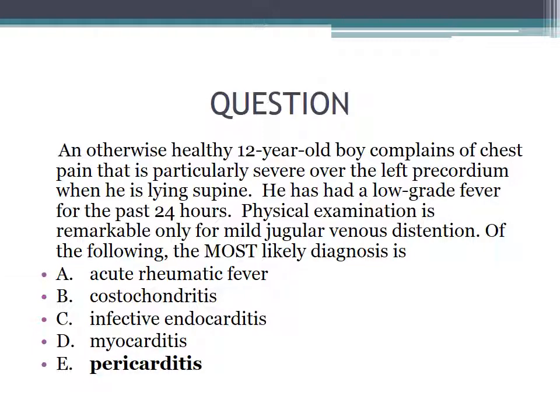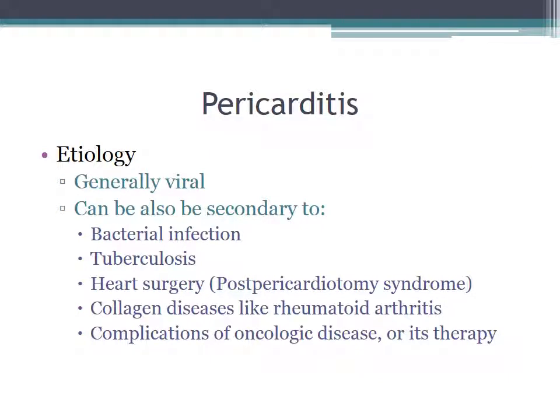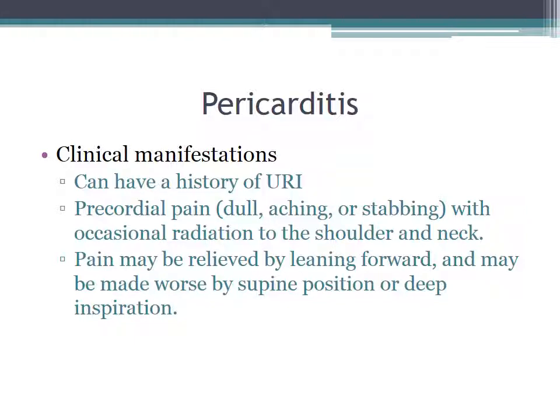The correct answer is pericarditis. Turning towards the etiology of pericarditis, it's typically viral, except when it's not — then it can be secondary to bacterial infection, tuberculosis, heart surgery (particularly post-pericardiotomy syndrome), collagen diseases like rheumatoid arthritis, or complications of oncologic disease or the toxins used to treat it. Patients can have a history of upper respiratory tract infection. They can have precordial pain that's dull, aching, or stabbing, occasionally radiating to the shoulder and neck. The pain may be relieved by leaning forward and worsened by supine position or deep inspiration.